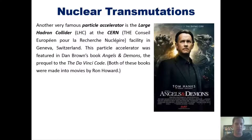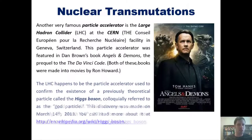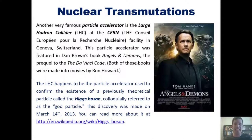It's located at CERN, the Conseil Européen pour la Recherche Nucléaire, a facility located in Geneva, Switzerland. This particle accelerator was featured in Dan Brown's book Angels and Demons, the prequel to the Da Vinci Code. The LHC happens to be the particle accelerator that was used to confirm the existence of a previously theoretical particle called the Higgs boson, colloquially referred to as the god particle. This discovery was made on March 14th of 2013.